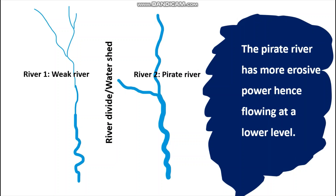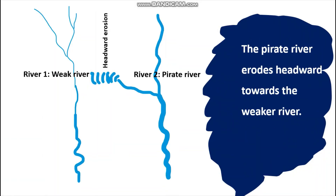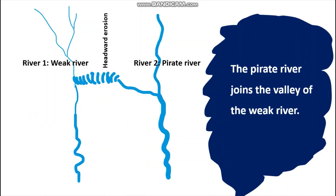One of the rivers is weak while the other river is strong. The strong river is referred to as the pirate river. It has more erosive power and for this reason it is flowing at a lower level. Eventually the pirate river will start eroding headward towards the weak river. Being a stronger river, it has high erosive power, and eventually through headward erosion the pirate river joins the valley of the weak river.